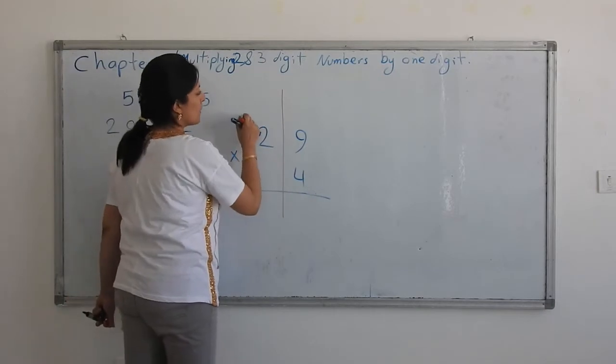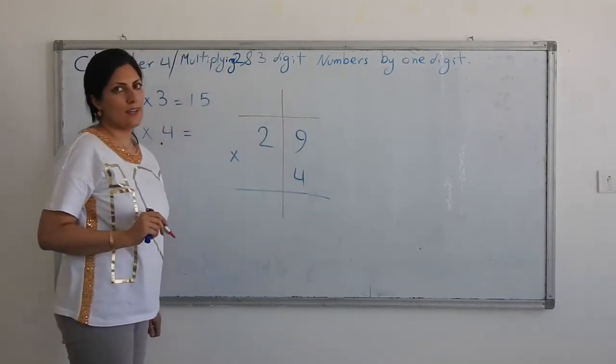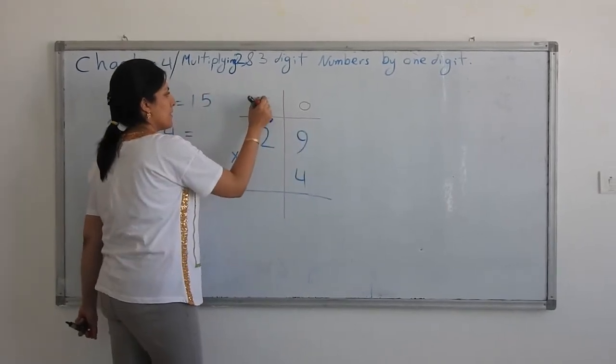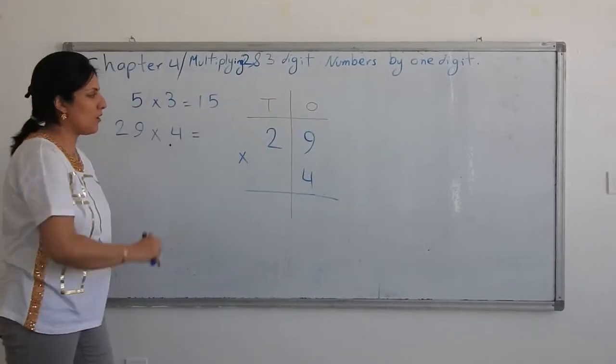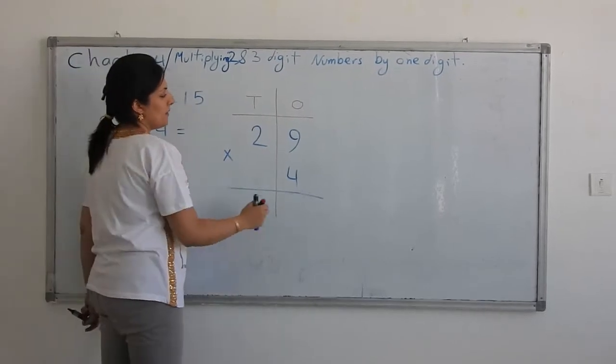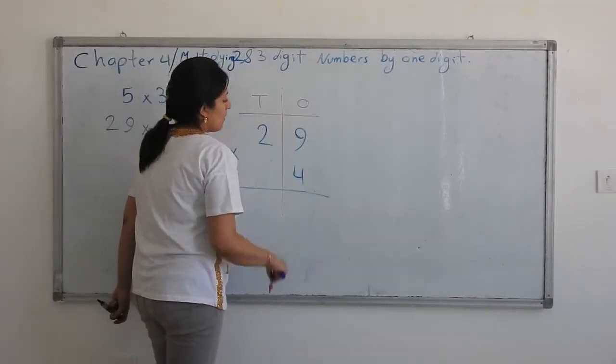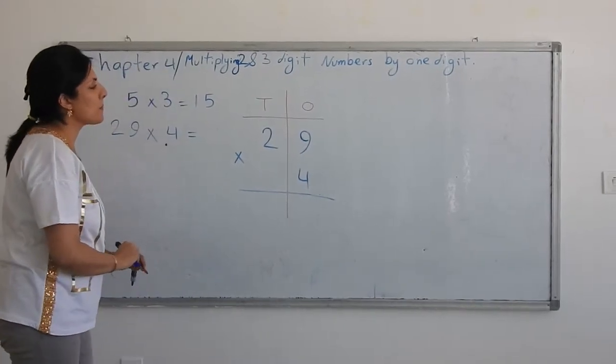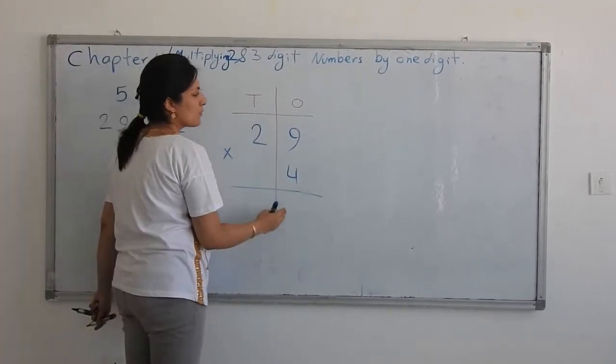We know for every number, we have a place value table. It starts with 1s, 10s, 100, and so on. So, for a two digit number multiplied by one digit number, we have to go through this pattern.